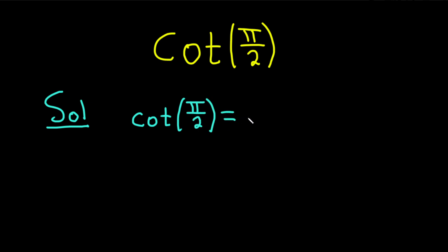It's cosine over sine. So this will be the cosine of pi over 2 over the sine of pi over 2, because cotangent is cosine over sine.